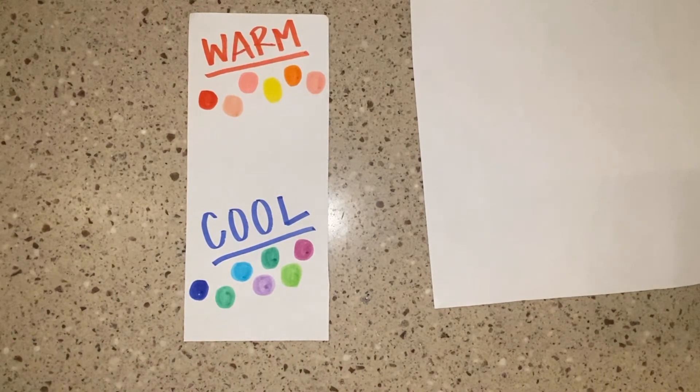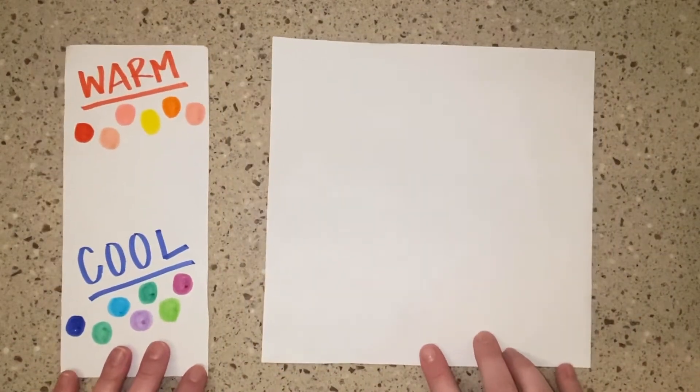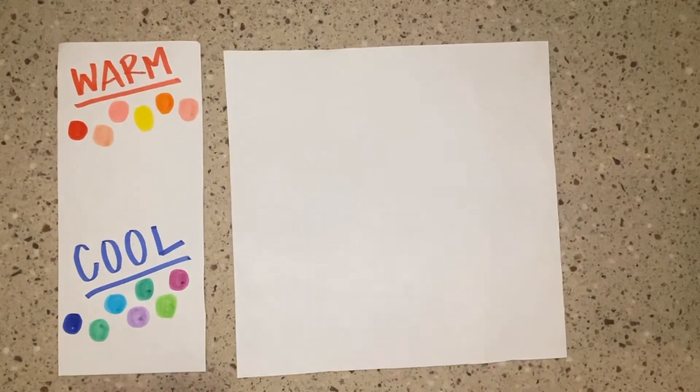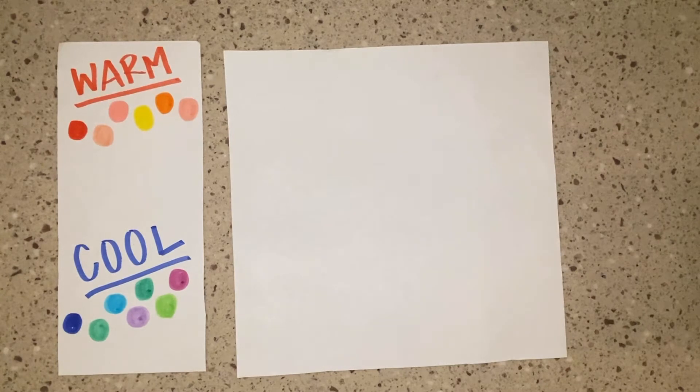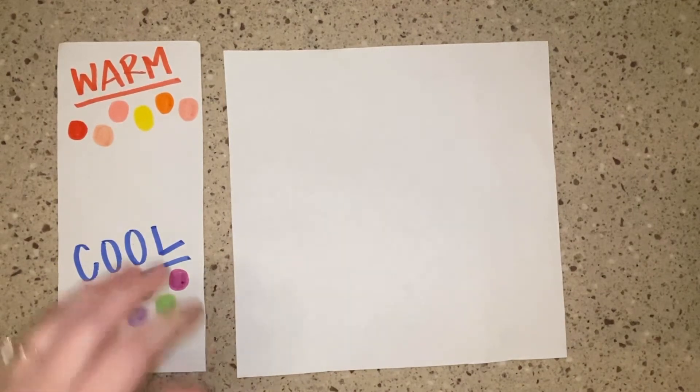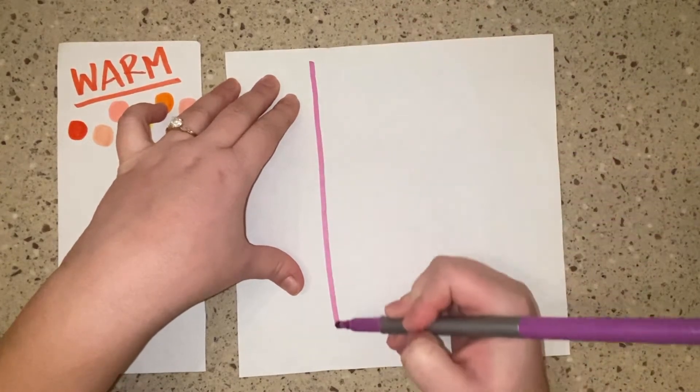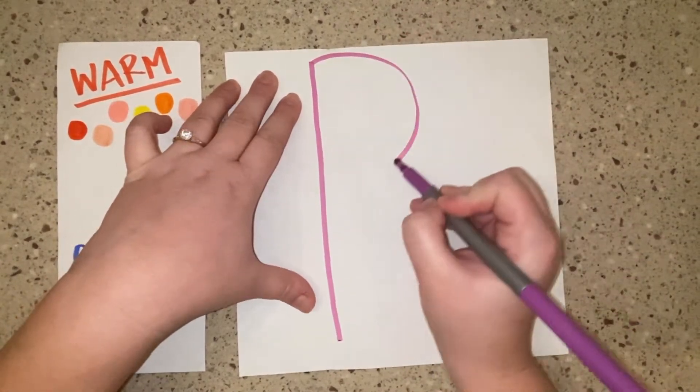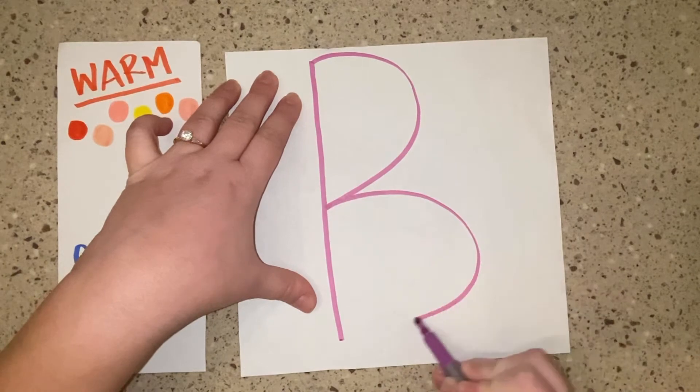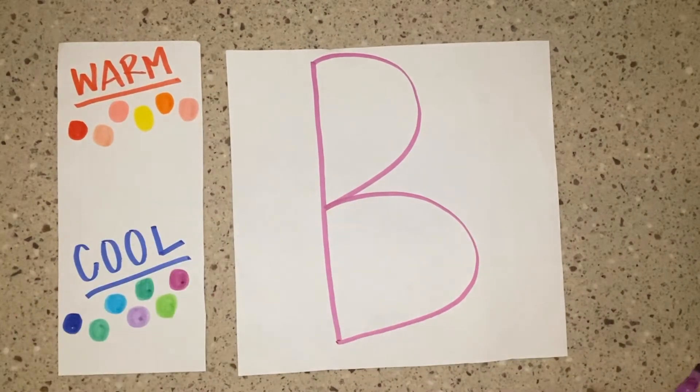All right, so we are now going to create our abstract drawing. You're going to pick warm or cool colors, one color scheme for your artwork. We're going to use the first letter of our name. So I'm going to use a B for Blevins and I'm going to draw it from the top all the way to the bottom. Take your time, make sure you don't draw it too small in the middle.